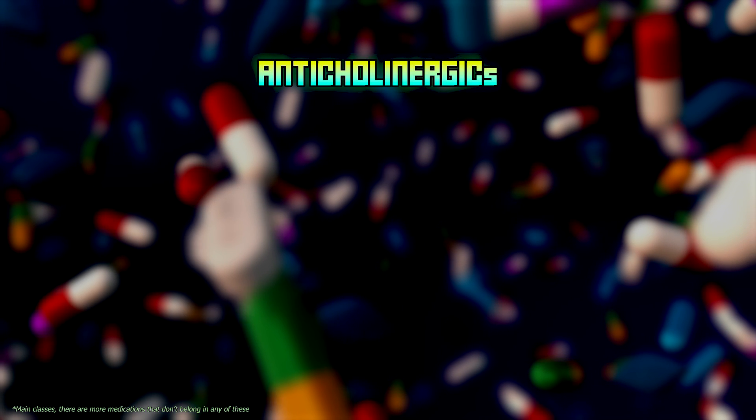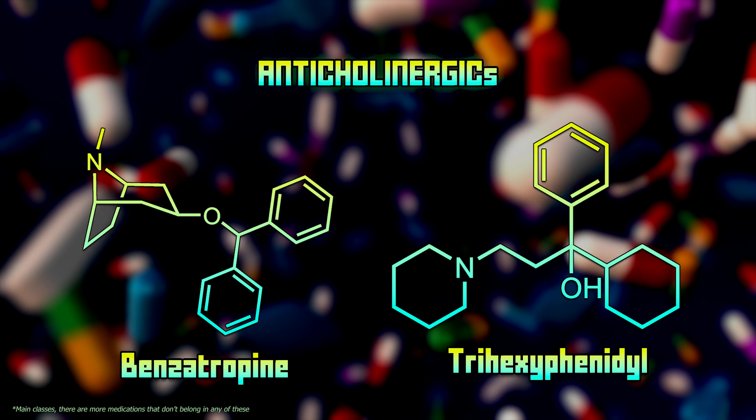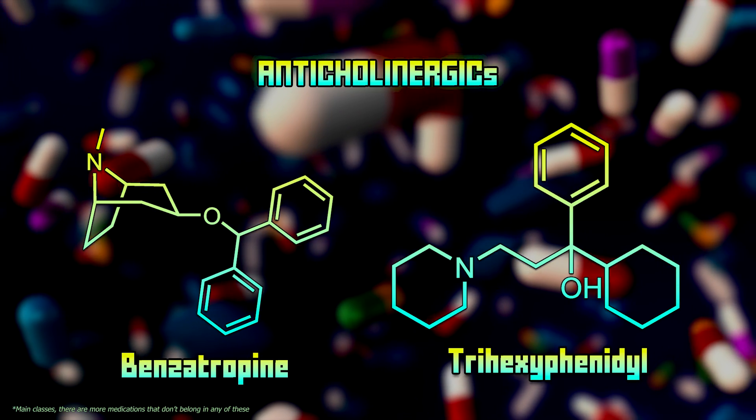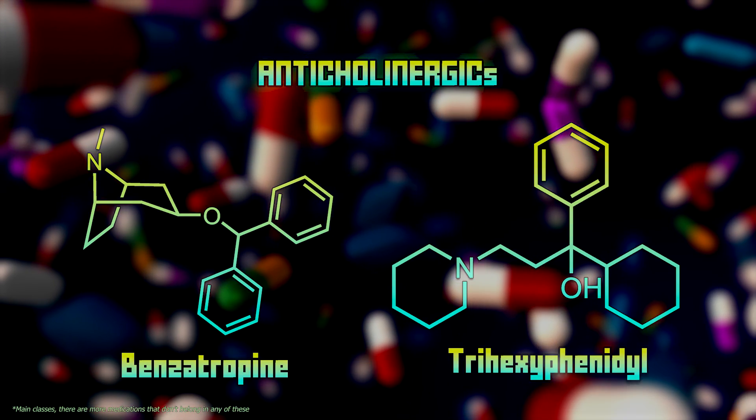And the last class are anticholinergic medications. These drugs help alleviate tremors and rigidity by blocking the action of acetylcholine, another neurotransmitter in the brain. However, they are less commonly used due to their side effects, including cognitive impairment and worsened memory.